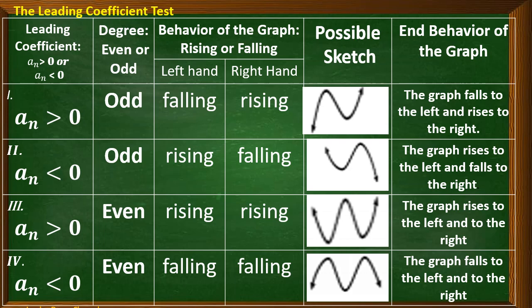Now let's familiarize the four cases of the leading coefficient test. First case: the leading coefficient is greater than zero — a positive value — and the degree is an odd number. The behavior of the graph on the left hand is falling, and on the right hand it is rising. In other words, the graph falls to the left and rises to the right.